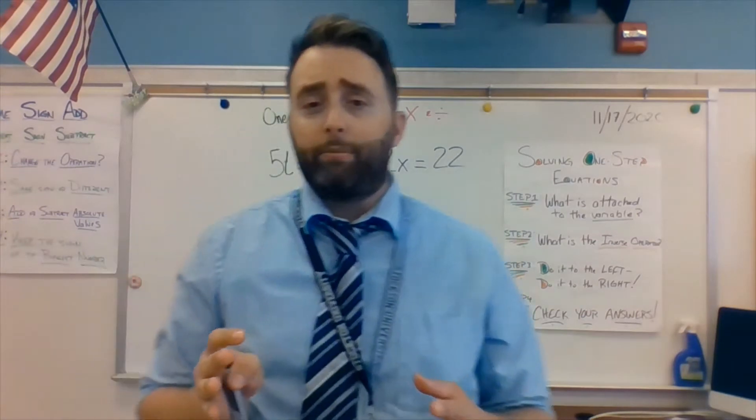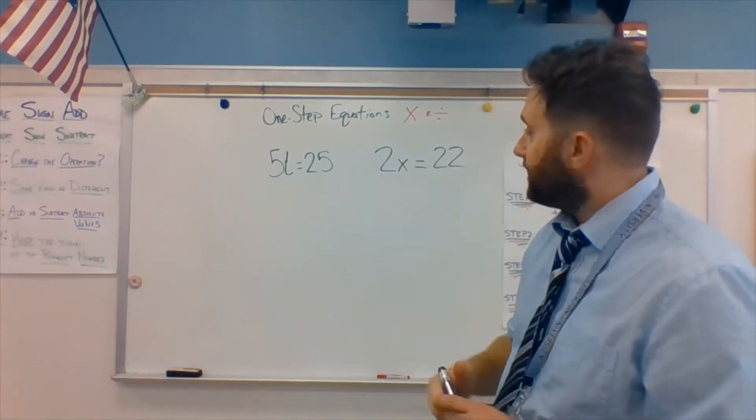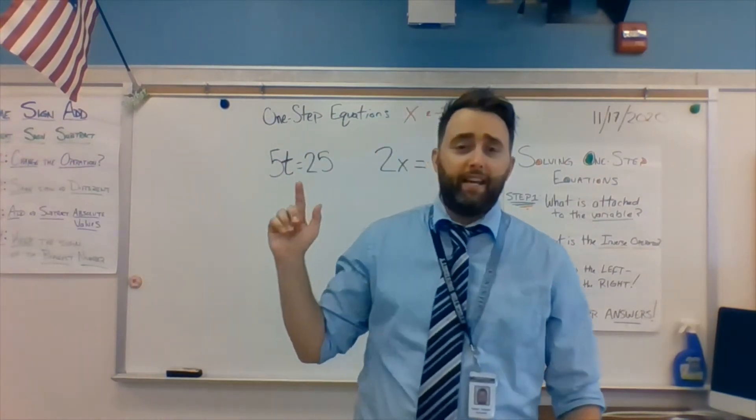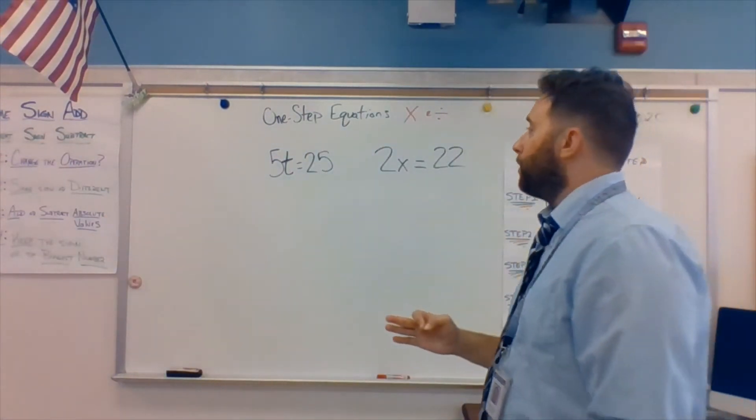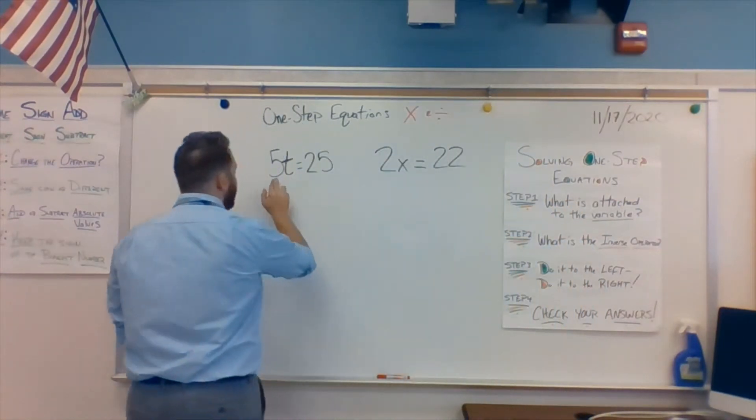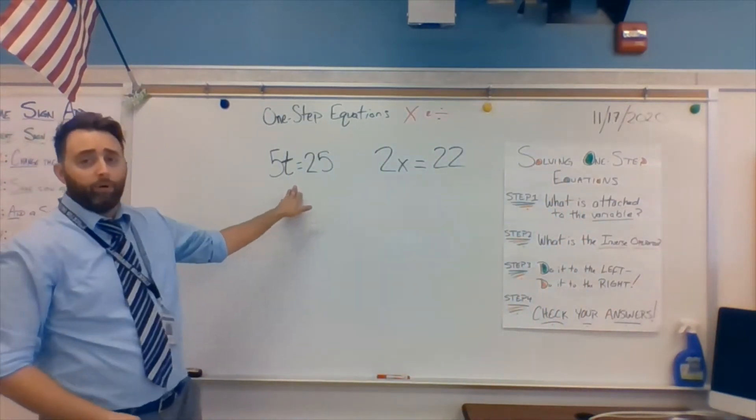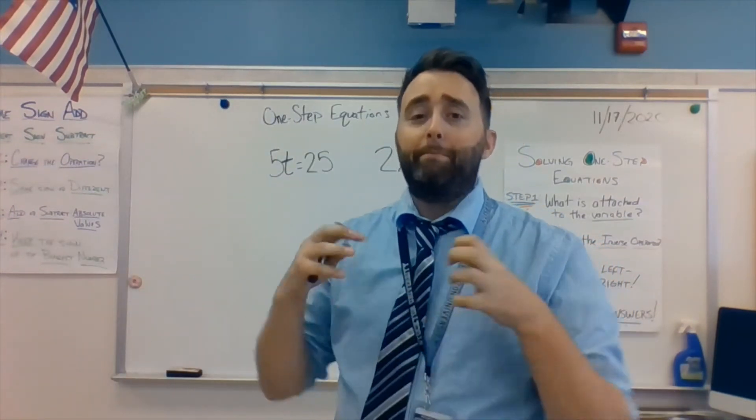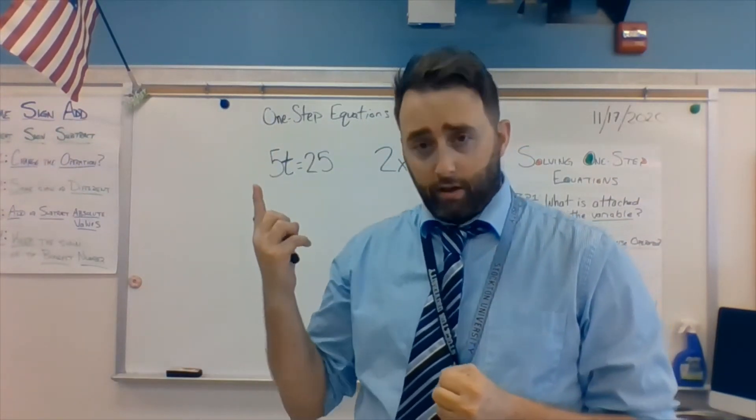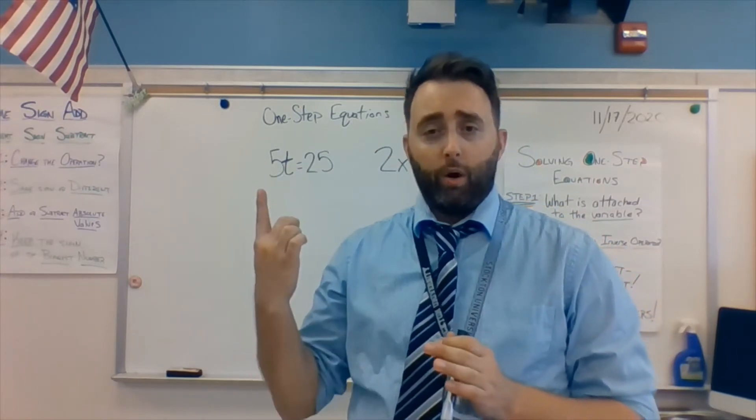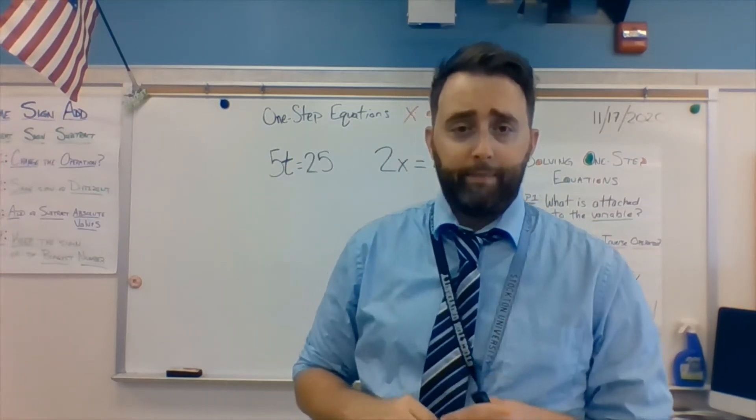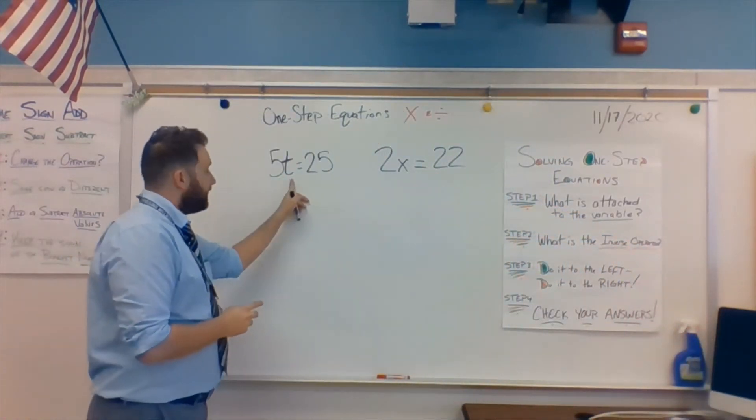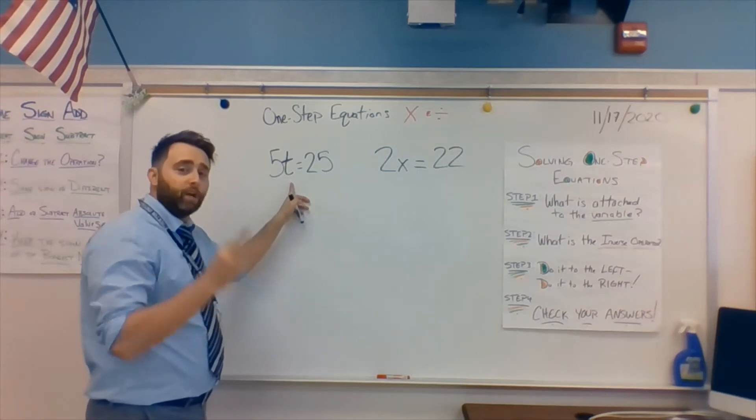Okay, so those are example problems. As you can see, I have a terribly written t. 5t equals 25. Remember, when you see a number right next to the variable, that means they're being multiplied together. That unknown thing, the variable, the unknown number is being multiplied to the coefficient to the number outside. Remember, coefficient, variable. Okay? Those two numbers are being multiplied together. Now, I know what you're saying, Mr. Neuser, that's not a number, that's a letter. This is a number. Remember, variable is an unknown number.